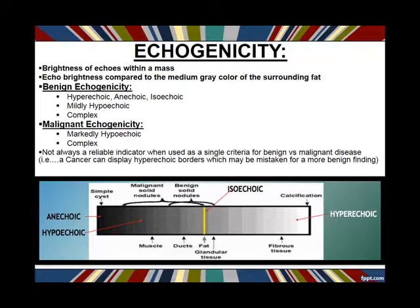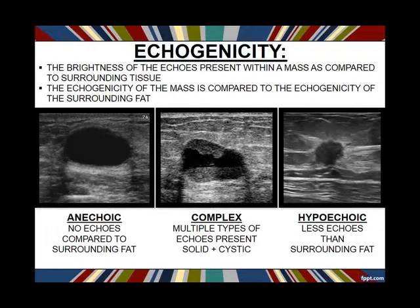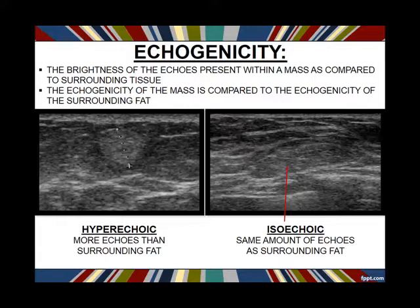At the other end of the spectrum, anechoic — meaning no echoes — is almost always benign. Anechoic means no echoes compared to surrounding fat. Complex means lots of different echoes — solid and cystic components. Hypoechoic is fewer echoes than surrounding fat, hyperechoic is more echoes than surrounding fat, and isoechoic is the same amount of echoes as surrounding fat.